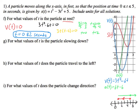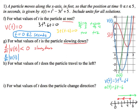For problem G: for what values of t is the particle slowing down? This is a trickier one. With slowing down, you don't care about the direction of velocity — what's important is the rate of change of speed, which is the absolute value of v(t). For slowing down, you want that to be getting smaller, meaning negative or less than zero. You want your speed decreasing. Just so you know, for speeding up, that rate would be positive.